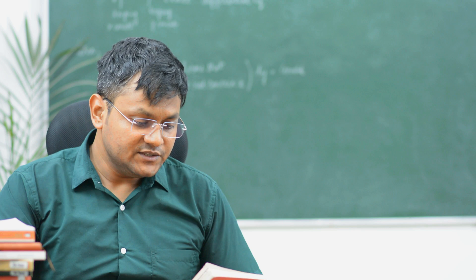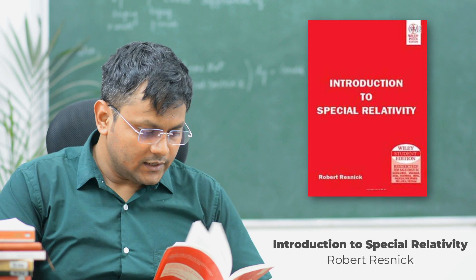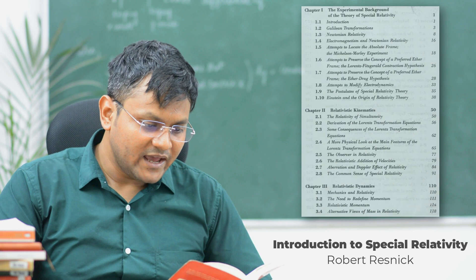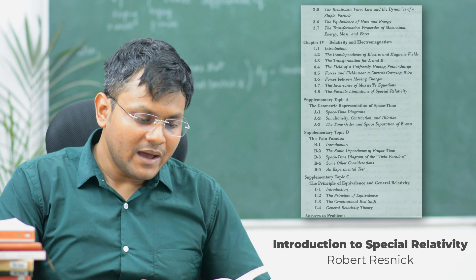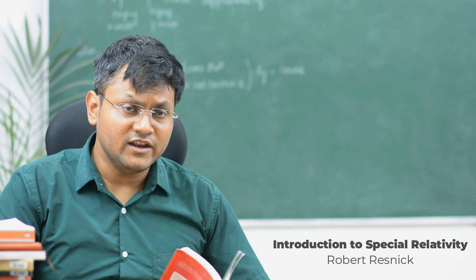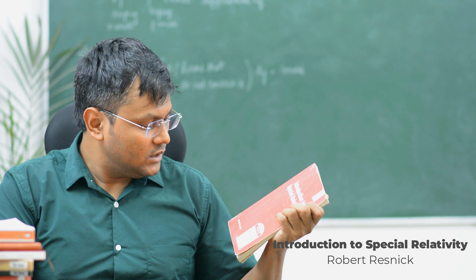A must-have for any beginner to intermediate student studying special relativity is Introduction to Special Relativity by Robert Resnick. It's a quite popular book — the language is good, the content is extremely detailed and descriptive, and there are a large number of problems and exercises. It includes a chapter on spacetime diagrams and the resolution of the twin paradox using spacetime diagrams, which you don't really see in many books. The last chapter is devoted to the equivalence principle. It's a small book but a must-have for beginners.